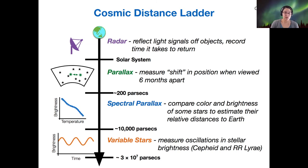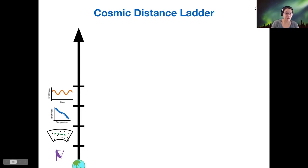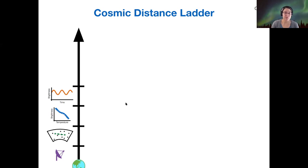If we think of this as an actual ladder with rungs, these are the first four rungs in order. Our mission is to add more rungs to the distance ladder, because even the variable star method is going to break down at longer distances.